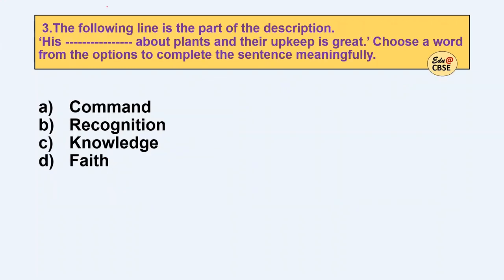Next: 'His dash about plants and their upkeep is great.' Choose a word to complete the sentence meaningfully. 'Command about plants' — no, that doesn't work. 'Recognition about plants and their upkeep' — seems okay. 'Knowledge about plants and their upkeep is great' — and 'faith about plants' — no, that can't be. Knowledge is the most appropriate, as it is a key requirement for a gardener. So the correct answer is C.